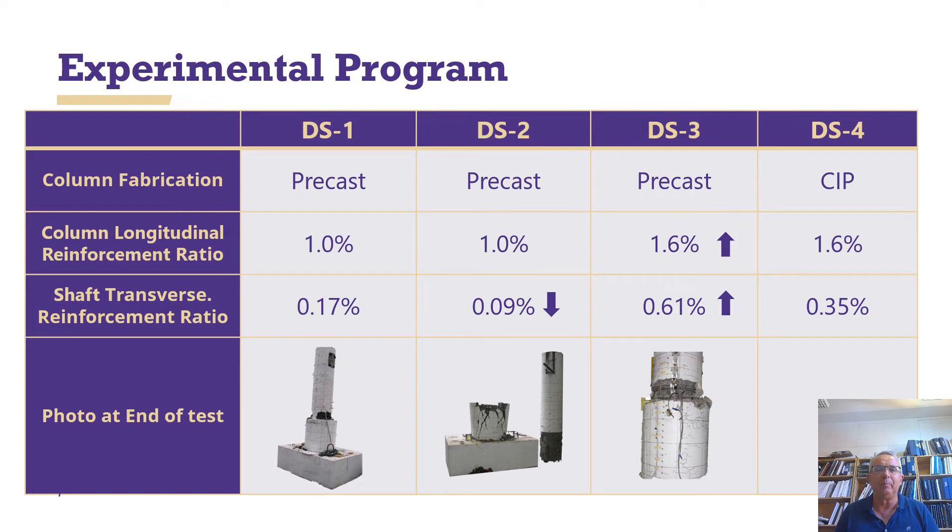In DS3, we made the column much stronger by increasing the amount of transverse reinforcement and by increasing the amount of longitudinal reinforcement. And then we also made the transverse reinforcement larger as well. And again, we force failure into the column, which is where we want it.